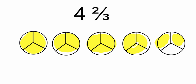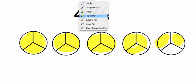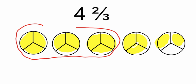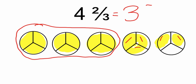So what we're going to do is, instead of calling this four and two-thirds, we're going to change the name. We're going to take three of these wholes and say that four and two-thirds could also be three. Then we're going to make a fraction — we have one, two, three, four, five pieces out of three, because every single whole has three pieces.